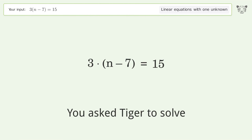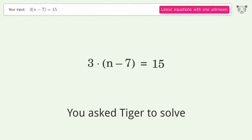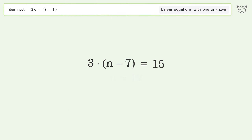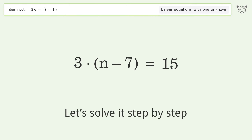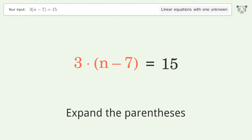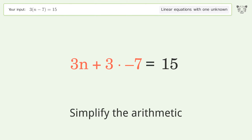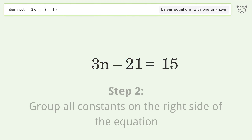Tiger is asked to solve a linear equation with one unknown. The final result is n equals 12. Let's solve it step by step: simplify the expression, expand the parentheses, simplify the arithmetic, and group all constants on the right side of the equation.